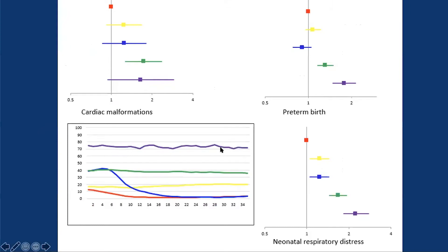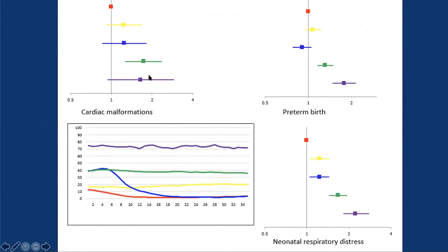What I really wanted to highlight is that when we looked at different outcomes, we see different patterns based upon the exposure trajectory. For cardiac malformations — modeled only through 12 weeks — the excess risk was concentrated in the two highest sustained trajectories. For preterm birth, antidepressants that were very low or discontinued early in pregnancy did not confer excess risk, whereas sustained trajectories showed a slightly increased, though modest, risk.